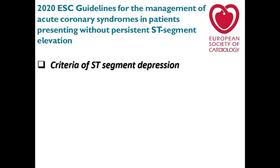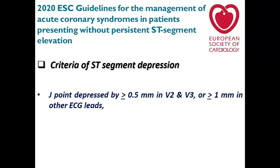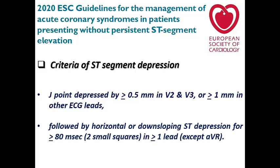In the 2020 ACC guidelines for non-ST elevation acute coronary syndrome, the criteria for ST segment depression require the J point depressed by more than or equal to 0.5 mm in V2 and V3, or more than 1 mm in other ECG leads, followed by horizontal or downsloping depression for more than 80 milliseconds — two small squares — in one or more leads except AVR. My advice: don't always strictly stick to the definition. If a patient doesn't fully meet criteria, repeating the ECG after 15–20 minutes may show the full picture.